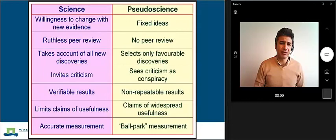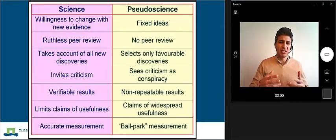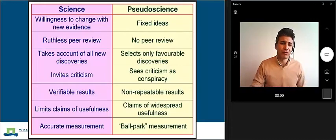You can see other differences as well. For example, in science we have accurate measurement, whereas in pseudoscience we have vague measurement, which means that we just measure based on what we want to measure, and there is no specific systematic approach to measure specific phenomena.